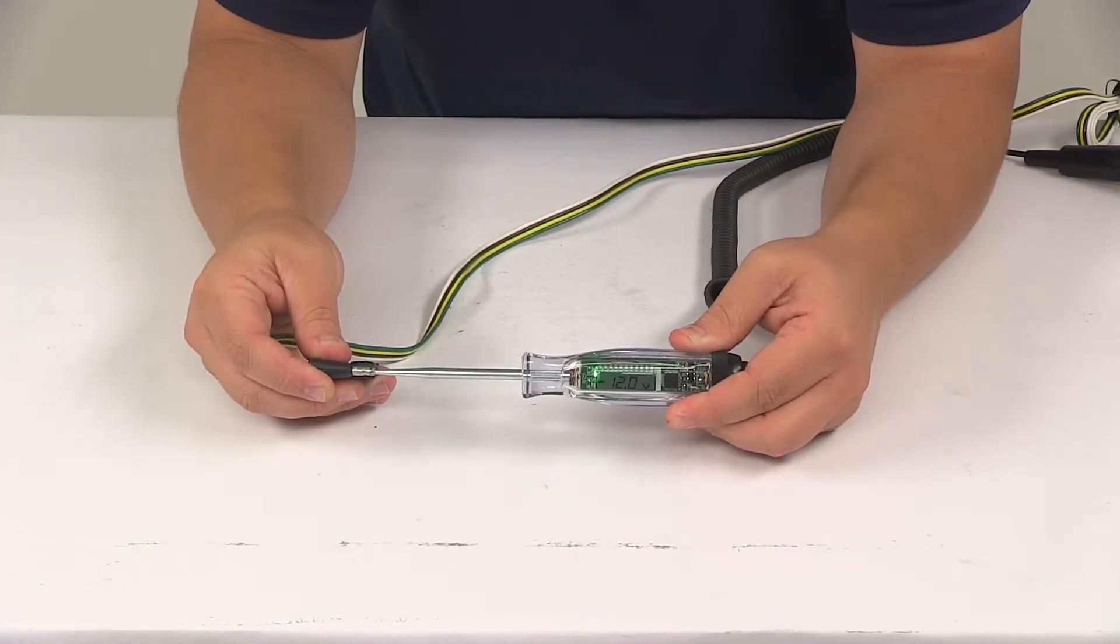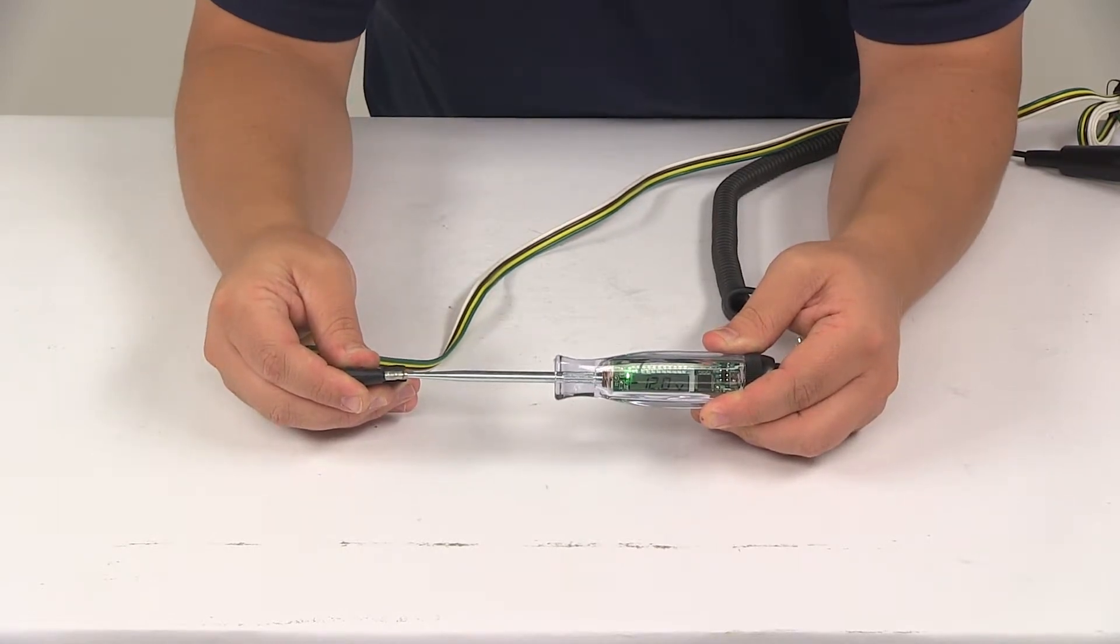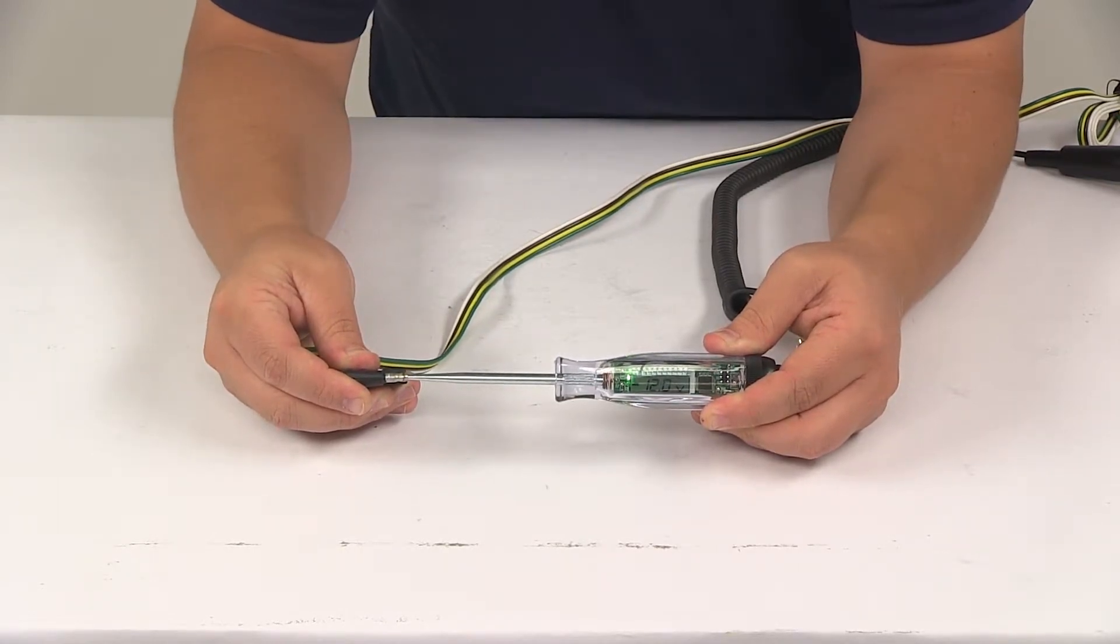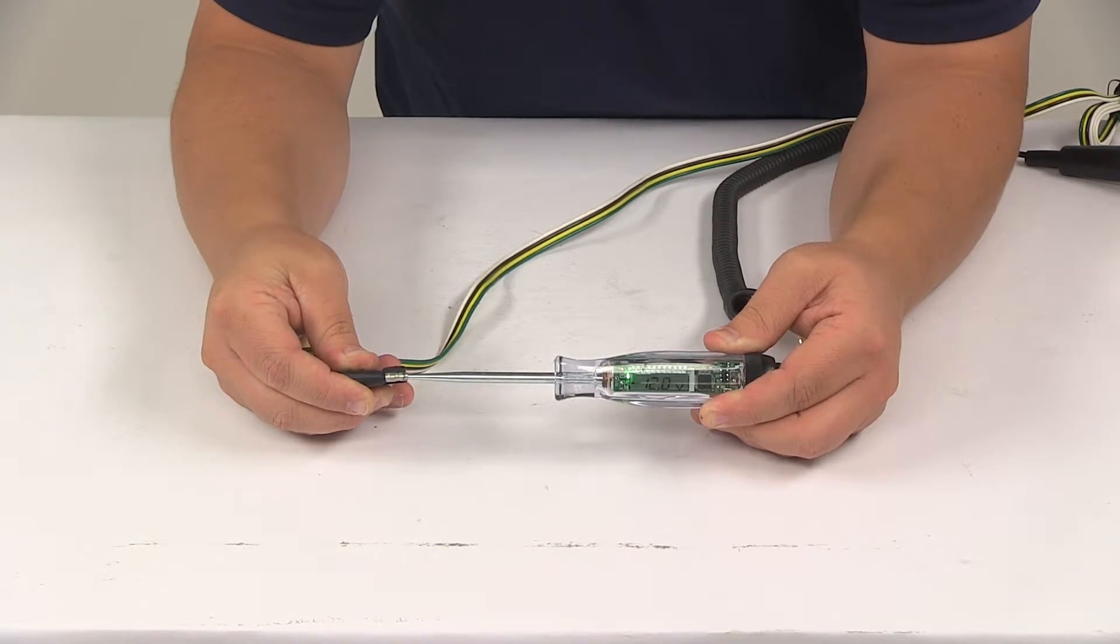So you can see that that LED is going to display green and it's going to display the voltage. All you got to do is touch the pointed probe to the circuit terminals, wires, or chassis to locate the ground. Then the green LED will illuminate and the LCD will display the measured voltage.